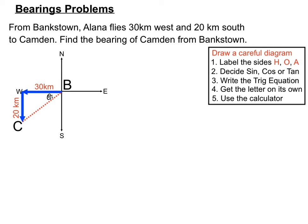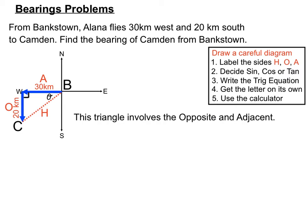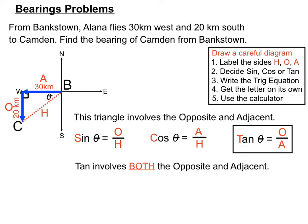We create the right angle triangle — it has a 90 degree angle since we went west and then south, which are 90 degrees apart. We place theta at the top corner. We label the sides: the opposite is 20km and the adjacent is 30km. Since the ratio involving opposite and adjacent is tangent, we base our solution on the tan ratio.